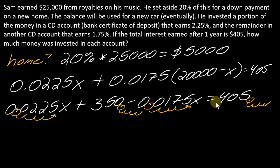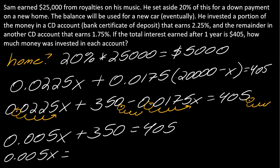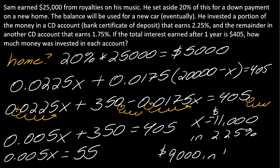Let me keep going with this, simplifying everything. What I get now is 0.005x plus 350 equals 405. If I subtract off the 350, I get 55. So then my x, when I divide that by 0.005, that comes out to $11,000. So it's going to be $11,000 in the 2.25% account, and then the remaining amount would be $9,000 in the 1.75% account.